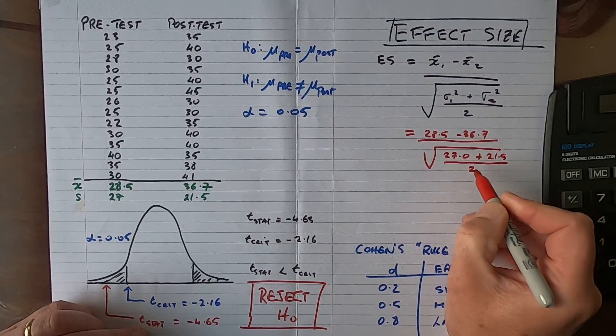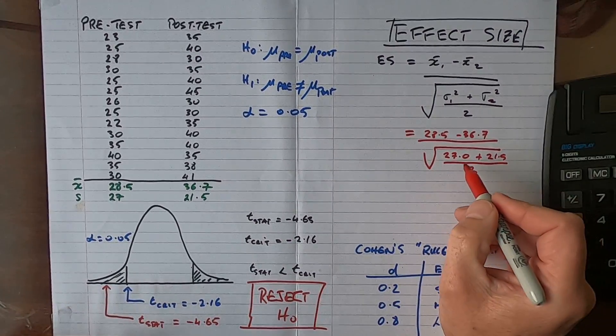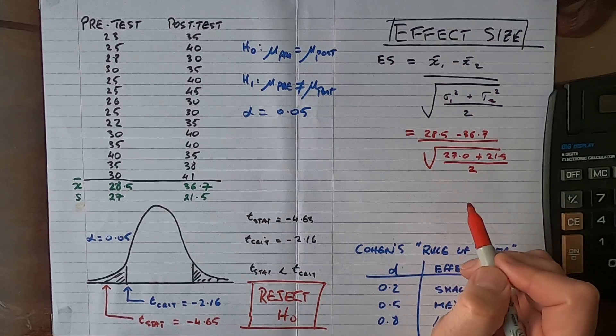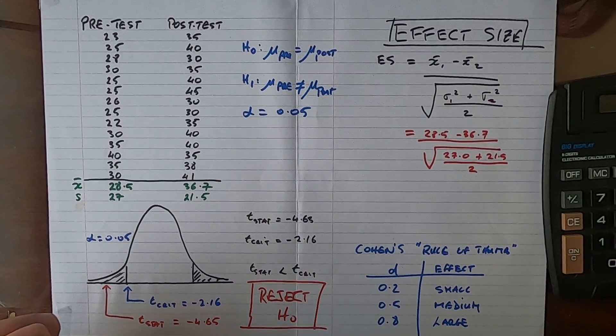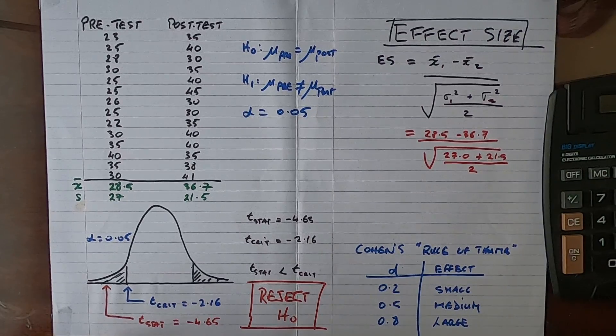I'll put in 27.0 just to keep the decimal places here, plus the variance for group 2, 21.5, and that gets divided by 2. That gives us the pooled variance, and then we're using the square root to convert the pooled variance into standard deviation. Standard deviation is the square root of the variance.